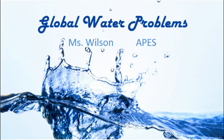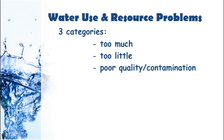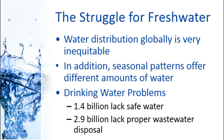Today we're going to be talking about some global water problems. When we start looking at water as a resource, we find that there are three problems that come up: either you have too much water in an area, you have too little water in an area, or you have poor water quality due to some sort of contamination or pollutant. Our lecture today is going to focus mostly on having too much water.